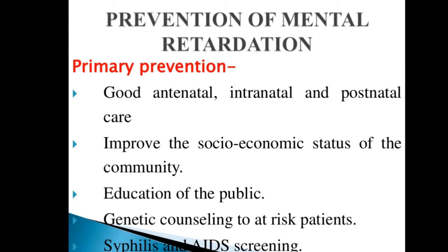How can you do prevention for mental retardation? First is primary prevention. In primary prevention, you have to provide good antenatal, intranatal, and postnatal care — before pregnancy, during pregnancy, and after pregnancy. You have to prevent any type of infection, and you have to improve the socio-economic status of the community.